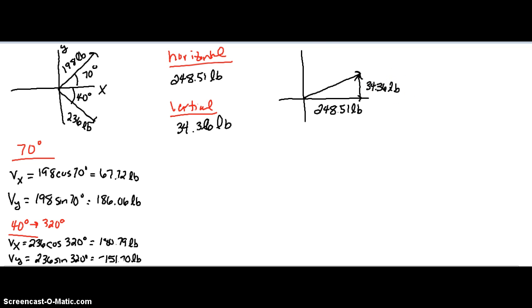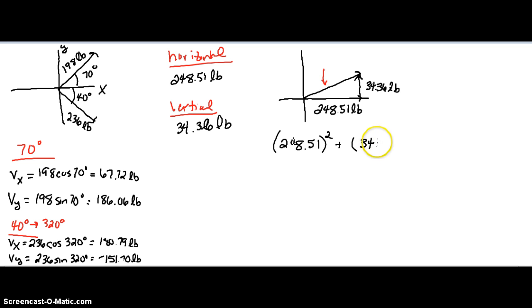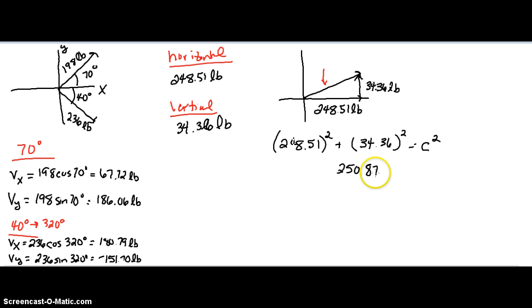I can now construct a new triangle with these measurements — 248.51 pounds horizontally and 34.36 pounds vertically — and I want to find the hypotenuse, which will be my equilibrium force. Using the Pythagorean theorem: 248.51 squared plus 34.36 squared equals C squared. Taking the square root gives the equilibrium force as 250.87 pounds.